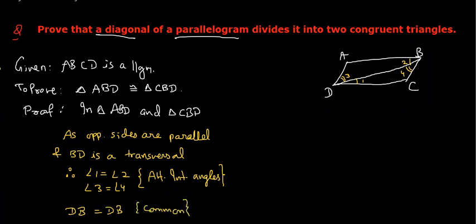Hence, these two triangles are congruent by which congruency criteria? ASA. Very good. Triangle ABD is congruent to triangle CDB.